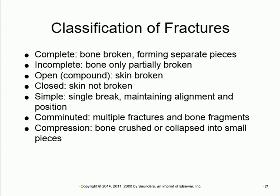A simple fracture is when the alignment is sustained — the bone is broken but still aligned. If alignment is lost, they have to realign it. A comminuted fracture involves multiple breaks with pieces moving around, changing the alignment — it's not just one bone becoming two, but multiple small fractures. Compression fracture is when the bone collapses or is crushed.